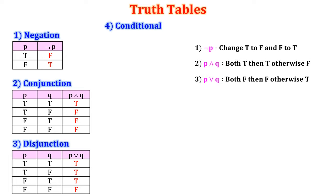4. Conditional statement. Consider two statements P and Q with four possibilities. The conditional is denoted as P then Q with a single arrow mark. If the first statement is true and the second statement is false, then the answer is false, otherwise true. So remember: T F gives answer F, otherwise true.